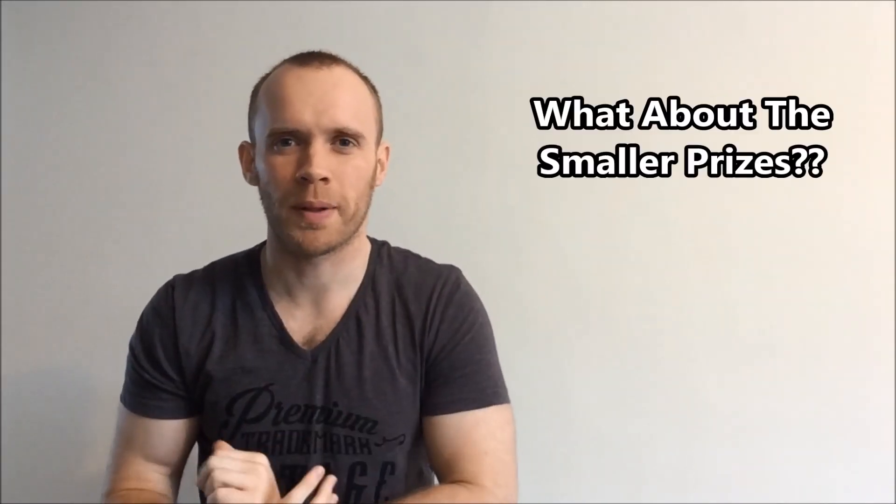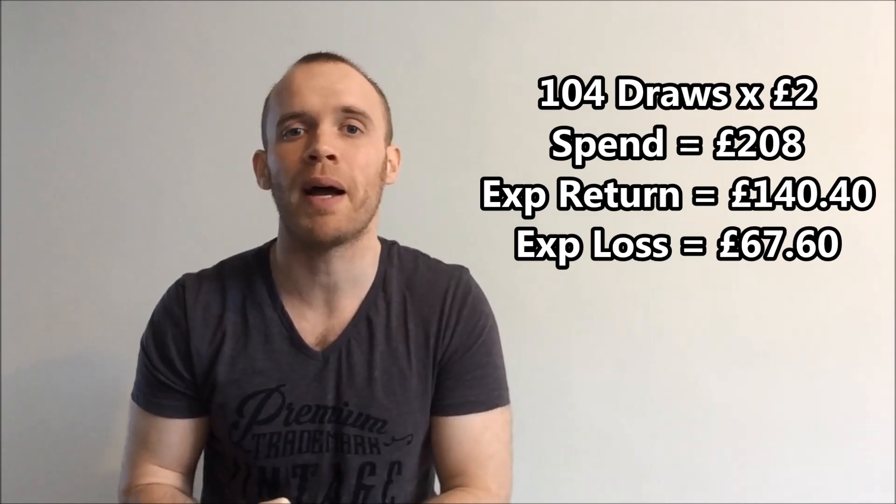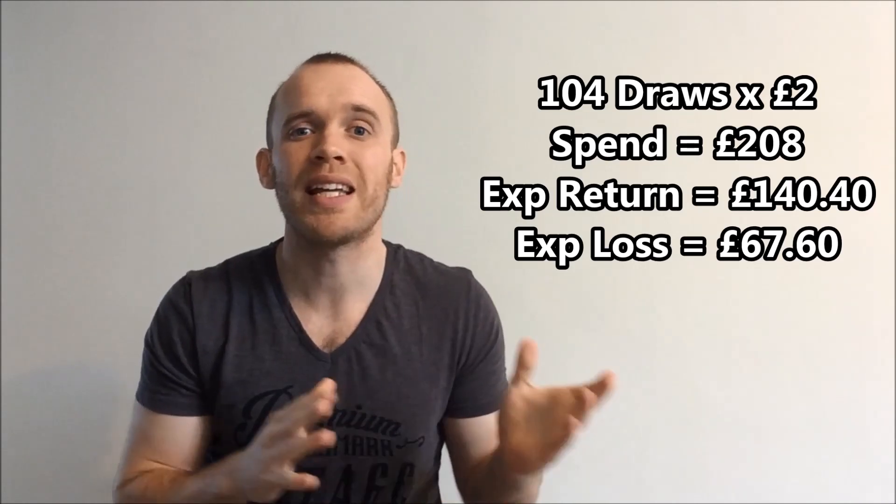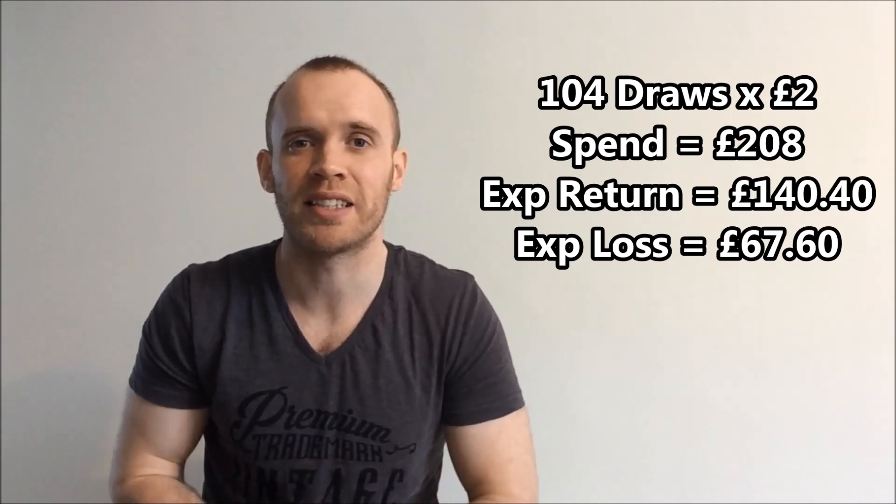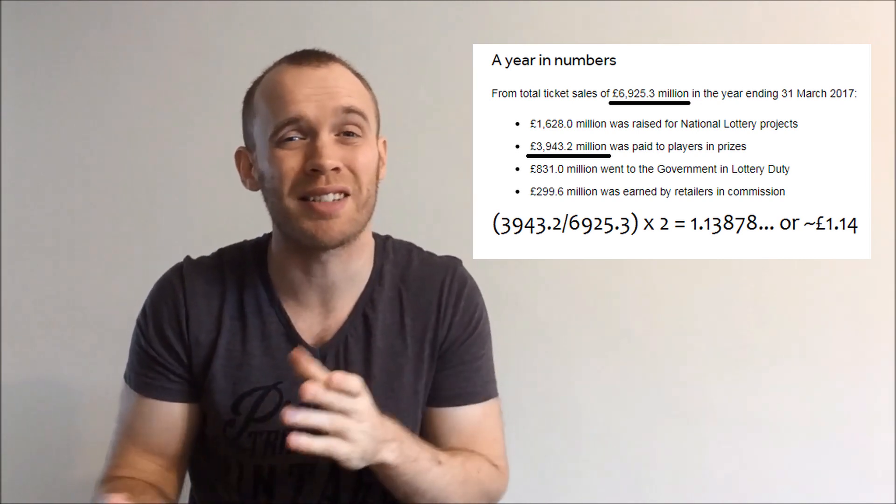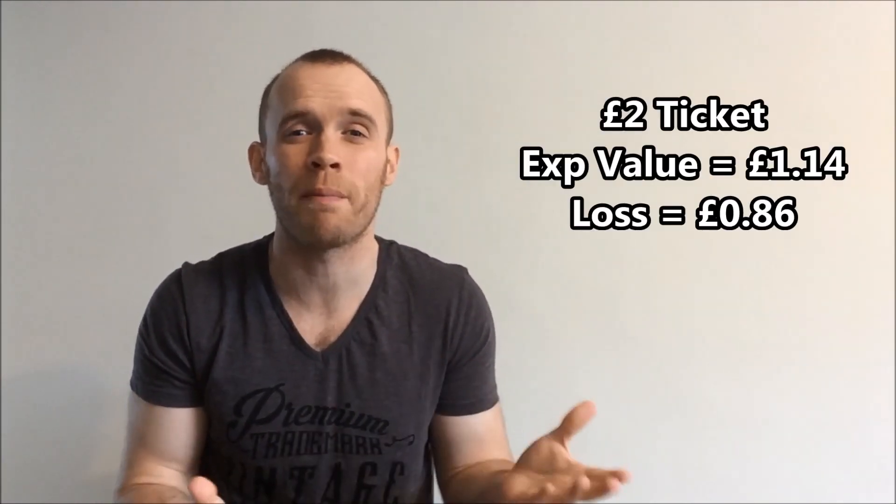But hold on. What about the smaller prizes along the way? Well, that's where expected value comes in. And at £1.35, you're expected to lose 65 pence per ticket. If you go for the 104 draws over the year, then you're going to pay £208 to win an average £140.40, meaning that you've got a net loss of £67.60. Now, that was picking a jackpot on the high end for the UK. Sometimes it's under 5 million. You can look at the statistics for ticket sales and see what fraction is paid out in prizes. In this case, it's around 57%, meaning that your expected value for a £2 ticket is £1.14.